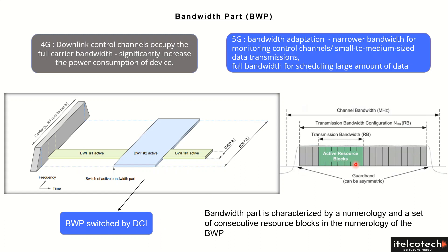Certain resource blocks remain active for a certain time and then may switch from one bandwidth part to another. For example, with a given channel bandwidth of 100 MHz, we have certain PRBs within that, and it is not required to transmit all the PRBs all the time. This helps save battery. It can also help reduce interference because we are not transmitting the whole large carrier all the time everywhere. So it is an efficient way of communicating and transmitting the frequency bands within 5G.